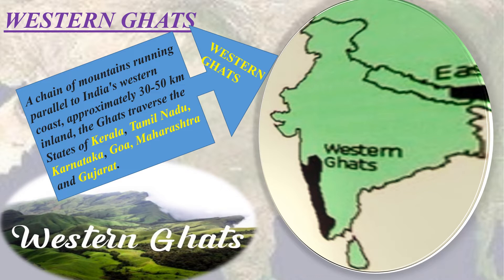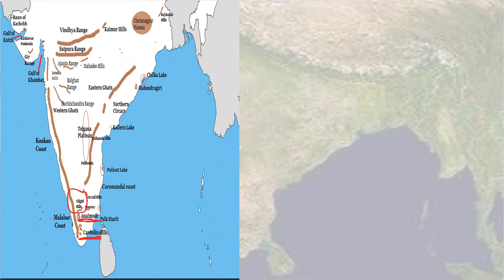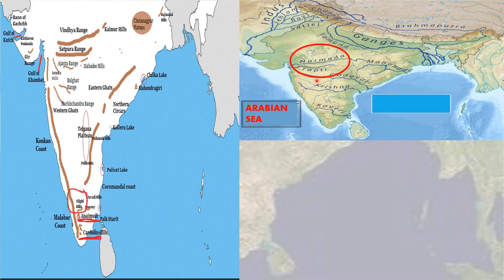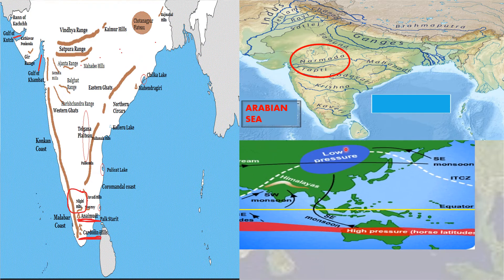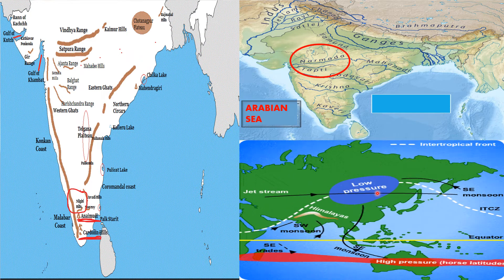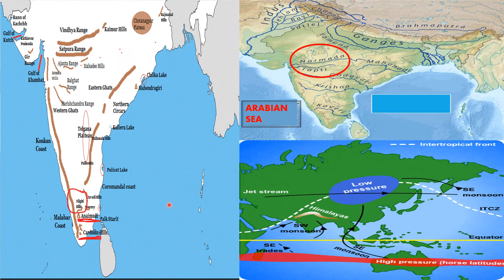The western ghats hills are steep and rugged and are the source of many rivers which drain into the Arabian Sea. They act as a climatic barrier to the southwest monsoon winds. Several hills are located on these ghats, such as the Nilgiris — the Blue Mountain — with the highest peak Doddabetta, and Cardamom Hills, the southernmost hill range in India, with the highest point at Anamudi.